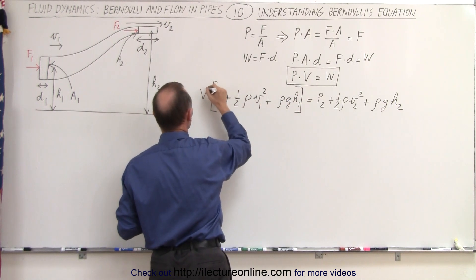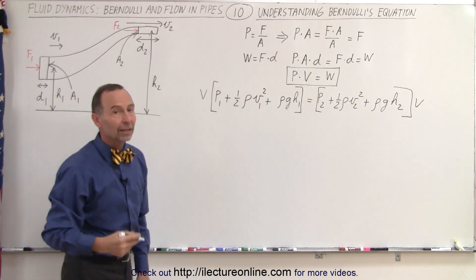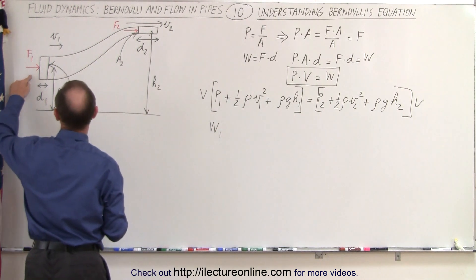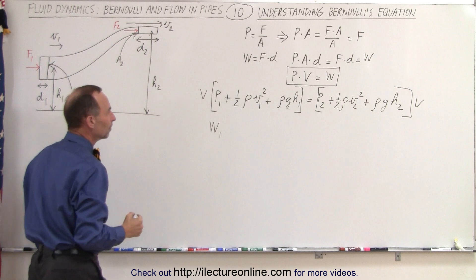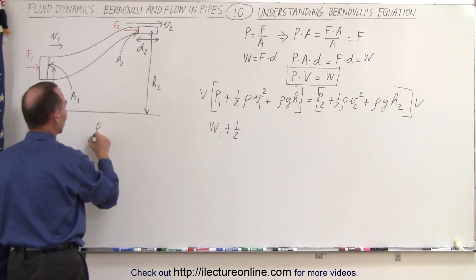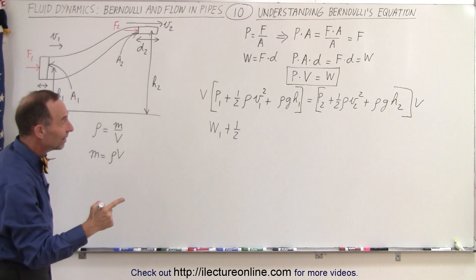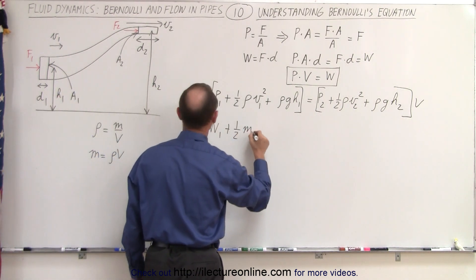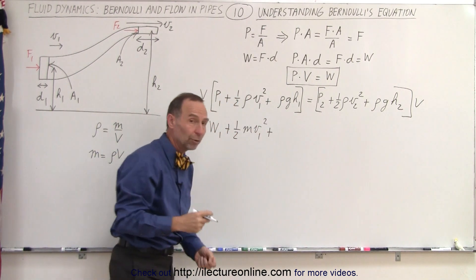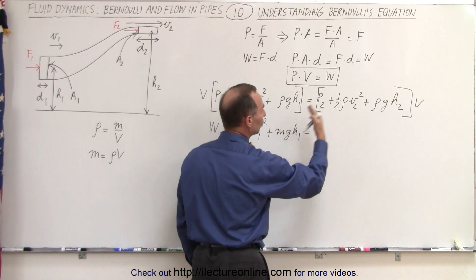We multiply the left side by volume, which is A times D, and the right side by volume, which is A times D. Volume times pressure equals work — specifically, work done at this location by the force pushing this amount of fluid a distance D1. Then we have one-half times density times volume. Since density equals mass divided by volume, mass equals density times volume. So by multiplying density by volume, we get the mass contained in this amount of fluid.